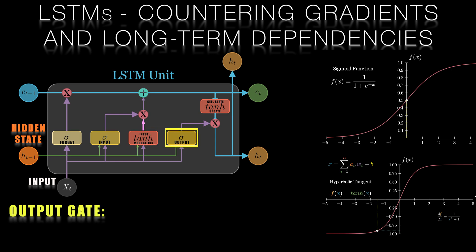The output gate determines which information should be output from the memory cell. It takes as input the previous hidden state and the current input as well as the current candidate values that have been added to the memory cell. These inputs are passed through a sigmoid to obtain an output gate activation value between 0 and 1 for each element of the memory cell. The output gate activation is then multiplied by the output of the tanh activation in the cell state update function, producing the final output of the LSTM cell.